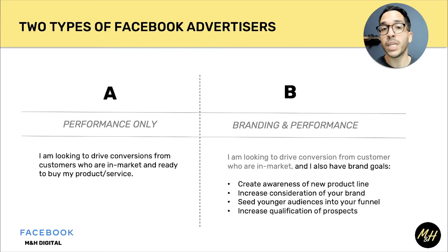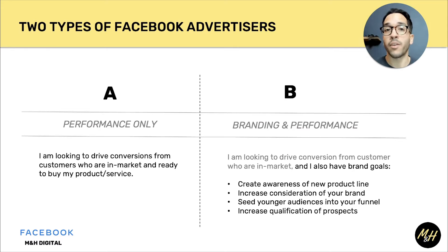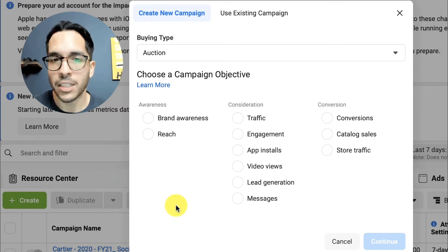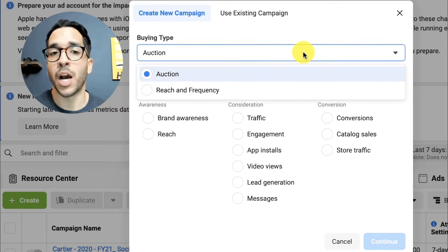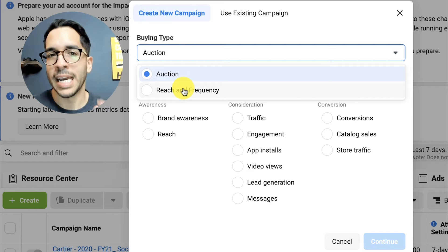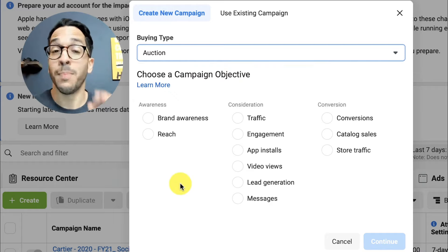The reason I'm telling you this is because if you are part of group A — performance only — some of the objectives we're going to cover aren't going to be that important to you. I want you to be aware there are other objectives you might not be using but are actually really useful to a lot of advertisers on Facebook. There are over 11 objectives in Facebook Ads Manager, and you also have the option to do an auction campaign or reach and frequency. For 99% of people watching this, you're going to want to do an auction campaign.